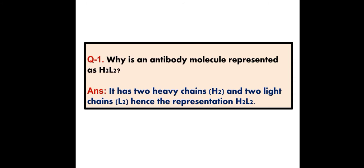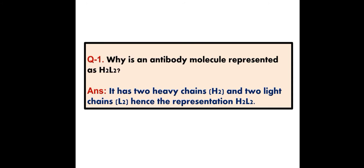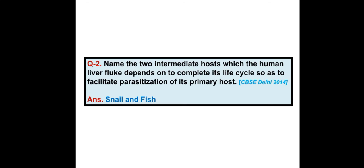Name the intermediate hosts which the human liver fluke depends on to complete its life cycle, so as to facilitate parasitization of its primary host. The liver fluke has a three-host life cycle. Snail and fish are the intermediate hosts, and human being is the primary host.